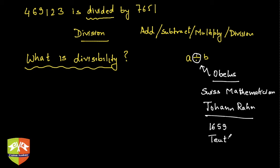He introduced it through his book called Teutsche Algebra - spelled T-E-U-T-S-C-H-E. In this book, for the first time, the symbol obelus was used which we have been using so commonly for division.